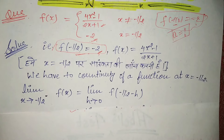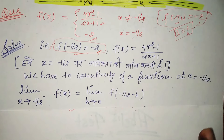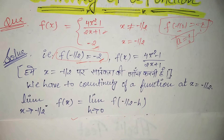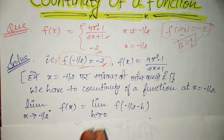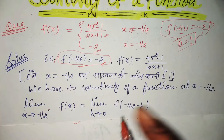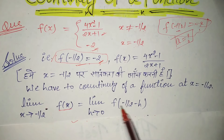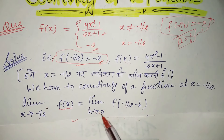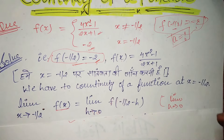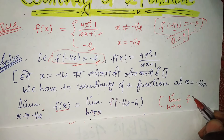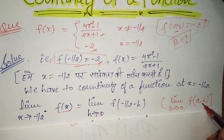Let's start. For the left hand limit, we denote it with a minus sign. The limit is: x tends to minus 1 by 2 (from the left), of f(x). The standard form for the left hand limit is: limit h tends to 0, f(a minus h). Here, in place of a, we have minus 1 by 2, so we write f(minus 1 by 2 minus h).